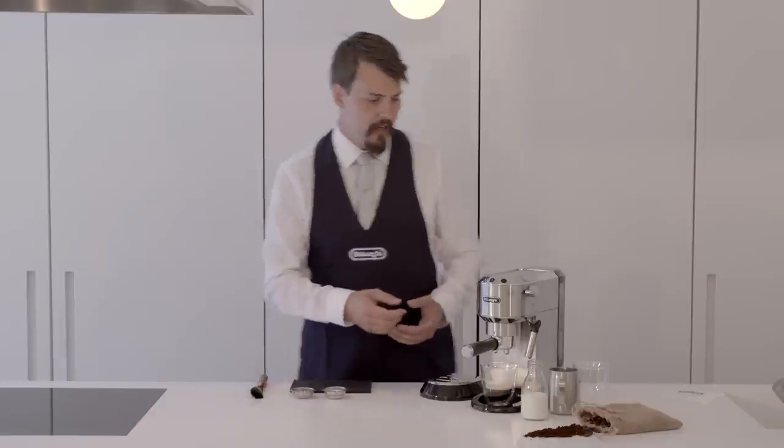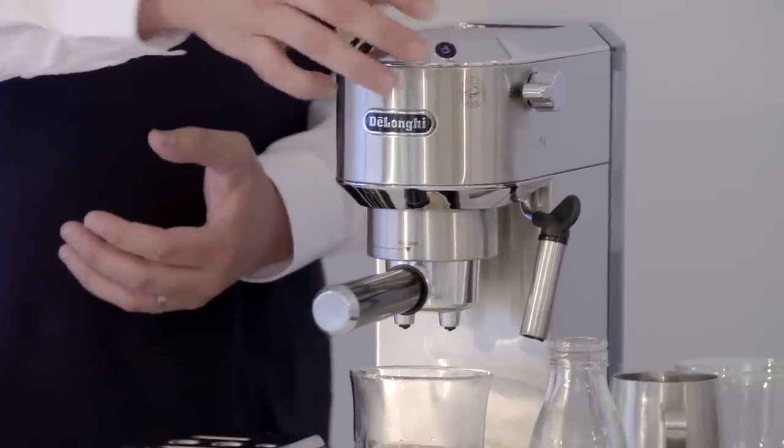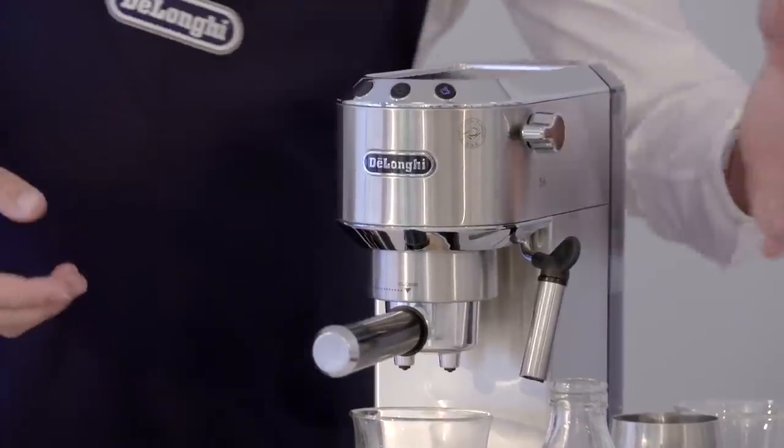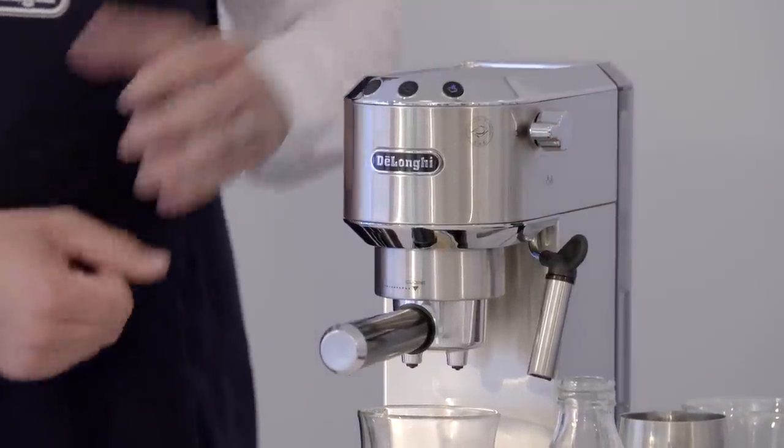We're going to start by turning our machine onto the steam setting, allowing the machine to warm up. Instead of producing hot water, we'll have steam coming out of the steam arm.